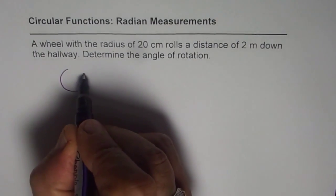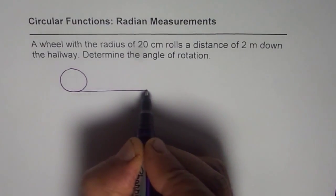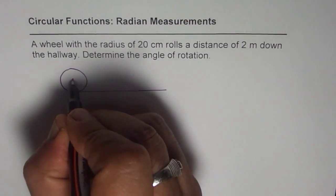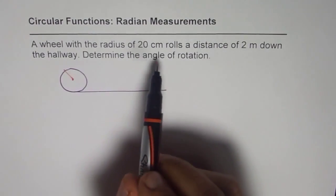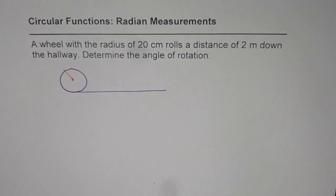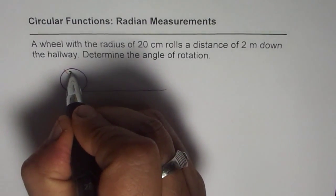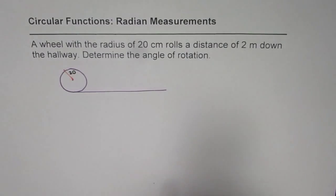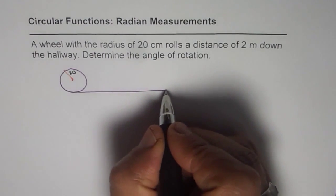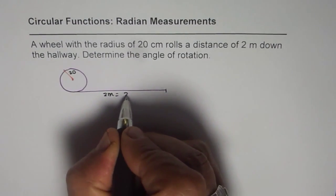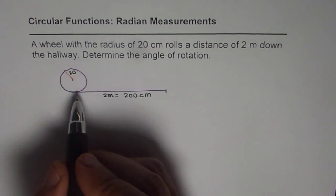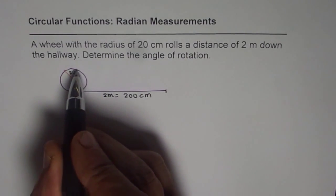What is happening here: let's say that is the wheel, and this wheel rotates along this path. We are given that the radius is 20 centimeters. The wheel rolls a distance of 2 meters — it's a good idea to write in the same units, so 2 meters equals 200 centimeters. So it rolls that much distance, and this distance is actually the circular arc length.